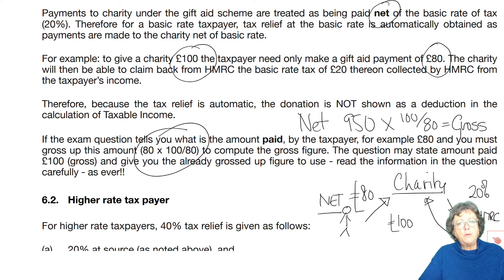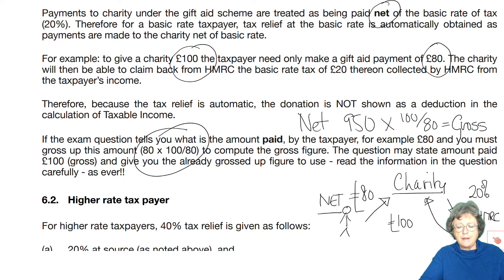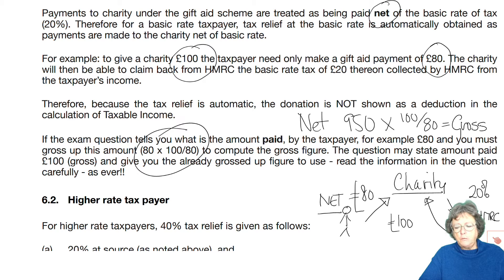Remember when we did ANI — adjusted net income — to see whether or not the personal allowance needed to be adjusted? Gross pension payments were part of that. You may want to stop the recording and look back at that page to confirm it in your mind. To get the gross you multiply it by 100 divided by 80 from whatever amount has been paid.